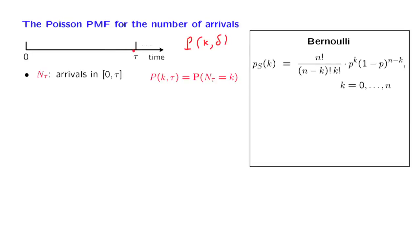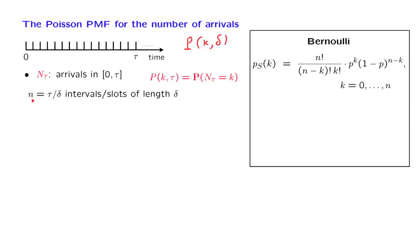The answer is yes, and it involves a limiting argument of the following kind. We take the interval from 0 to t and divide it into a very large number of intervals — so many of them — where each one has a length of delta, where delta is a small number. To push the analogy with the Bernoulli process, we will be calling those little intervals slots.